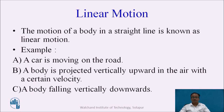Now, linear motion — in this, the body is in motion in a straight line, it is known as linear motion. For example, a car is moving on the road, and a body is projected vertically upward in the air with a certain velocity. Another example is a body falling vertically downwards. If a car is moving on a road, that motion is in a horizontal plane, so that is called horizontal motion. A body projected vertically upwards or downwards is a vertical motion.